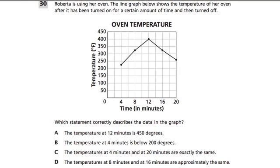In this question, they tell us that Roberta is using her oven. The line graph below shows the temperature of her oven after it has been turned on for a certain amount of time and then turned off. So here's our graph. It's about the temperature of the oven.